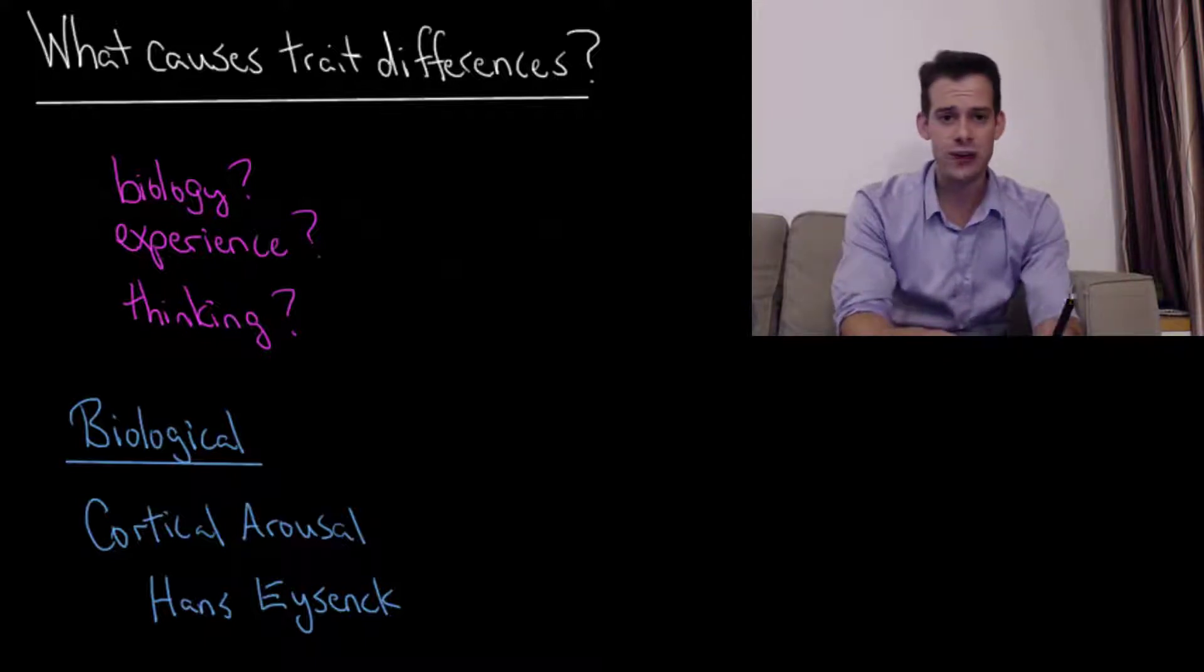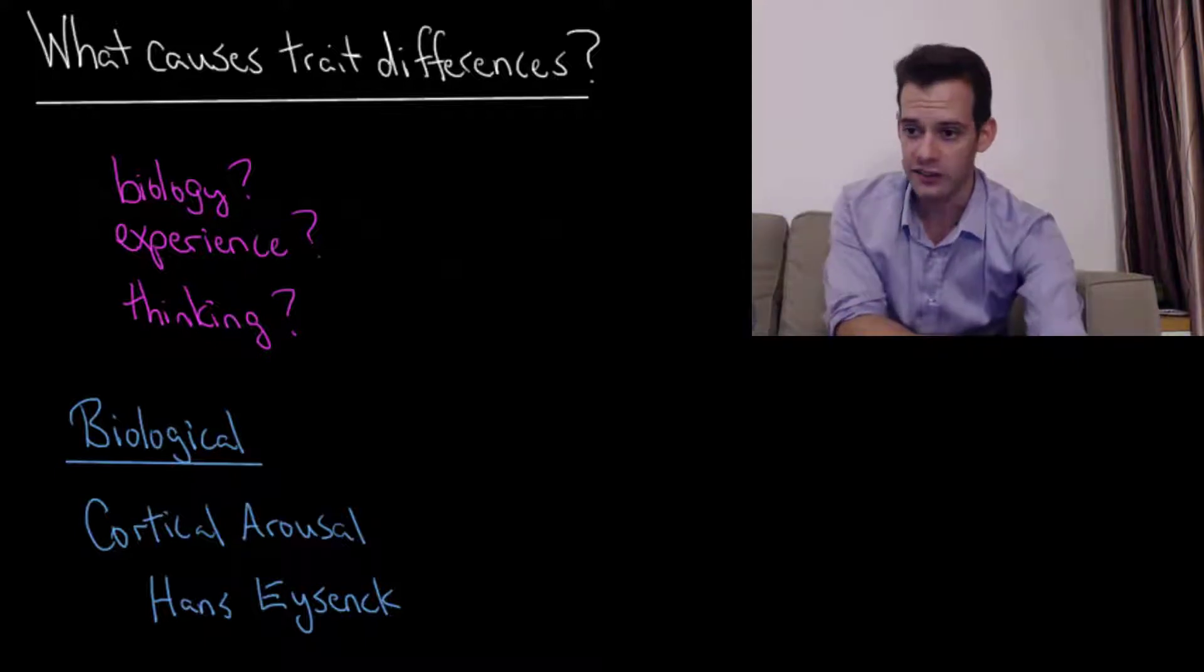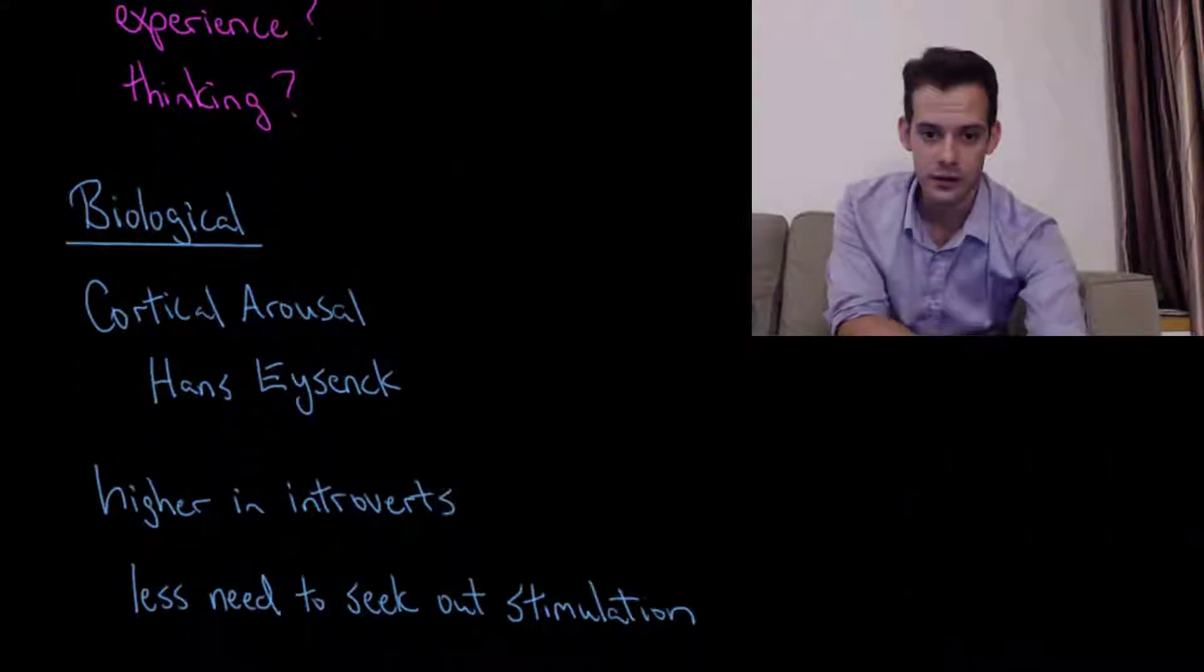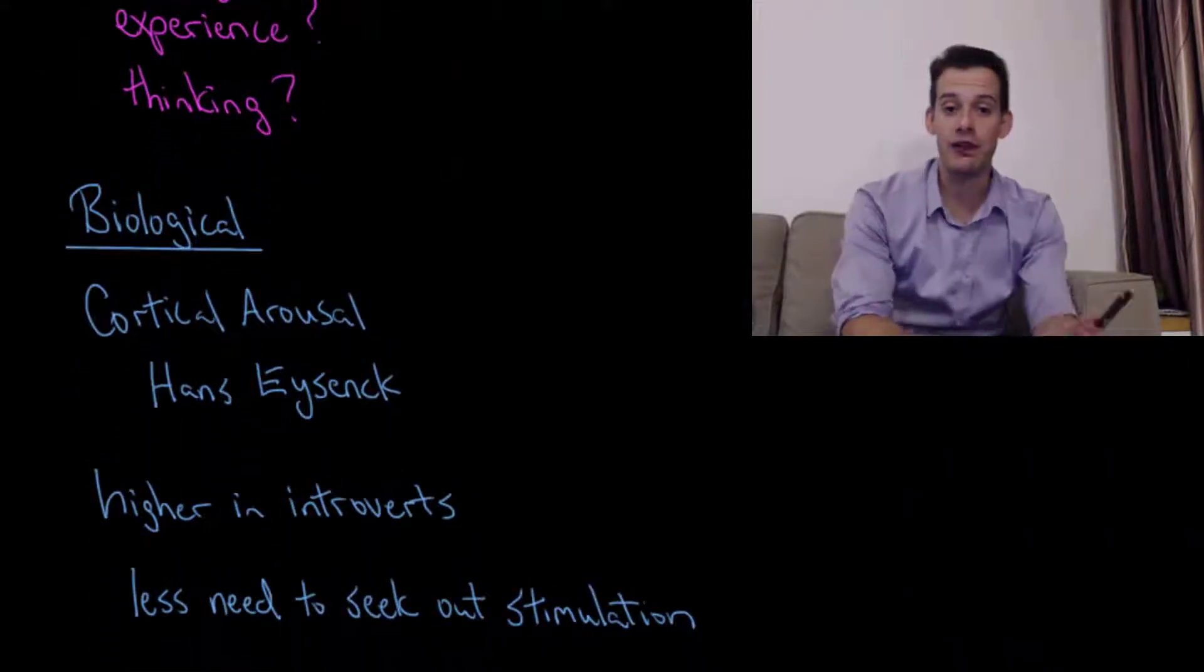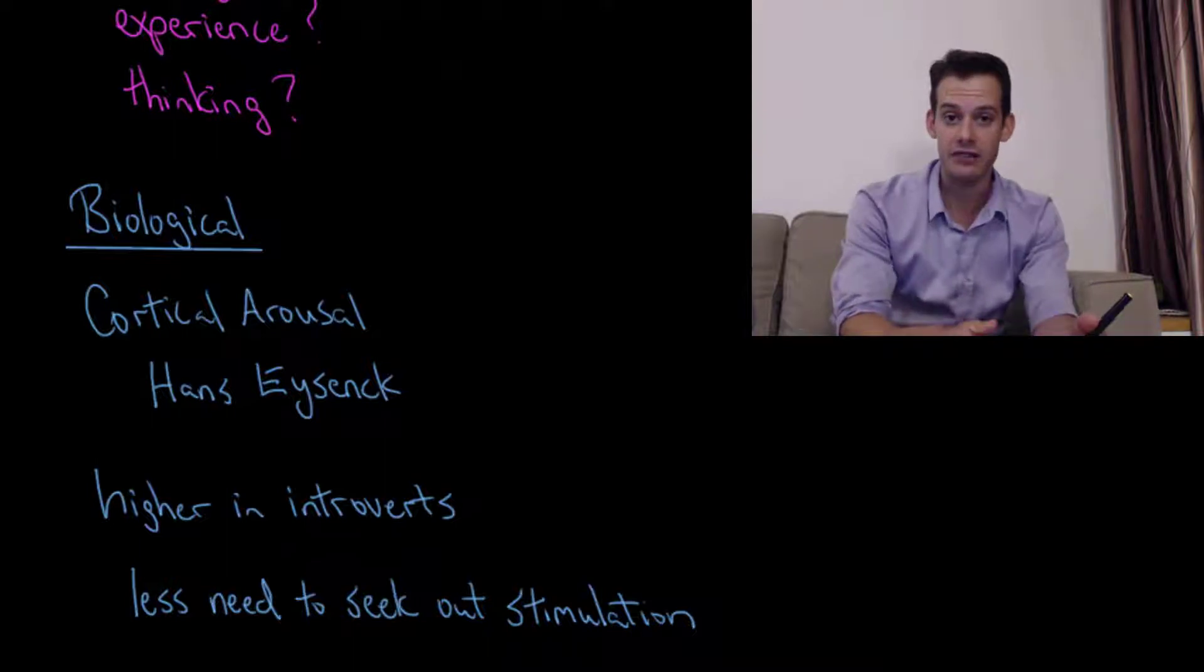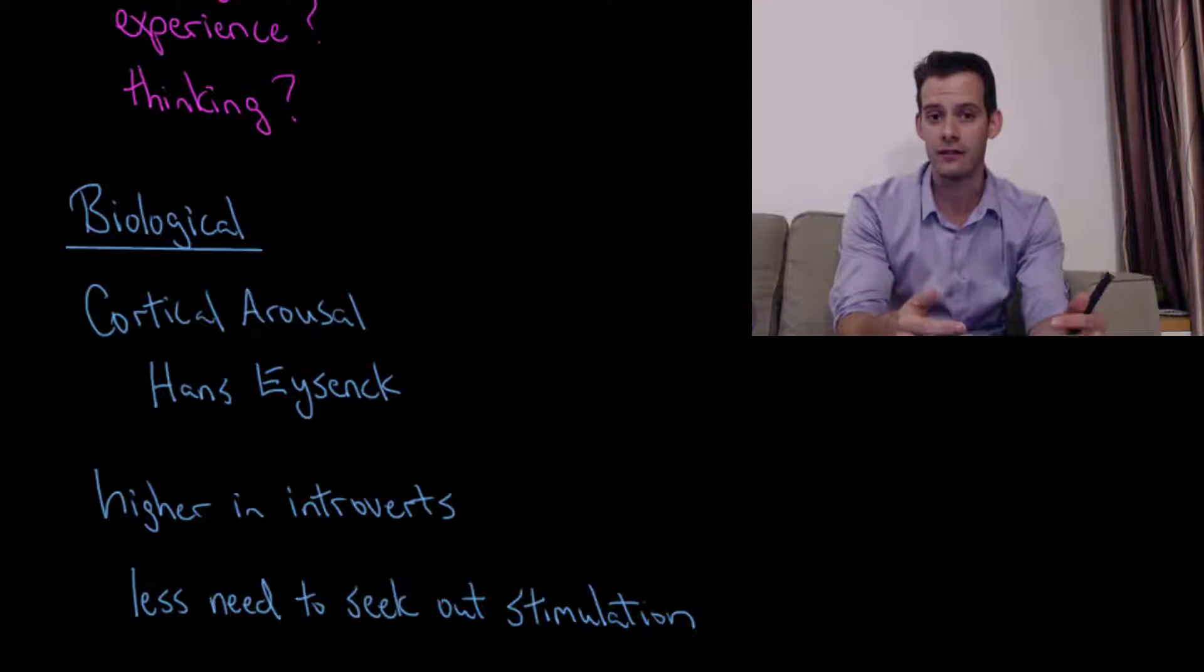Now when it came to explaining why people differed in extraversion, Eysenck proposed that it had to do with their level of cortical arousal. And this is actually a little bit counterintuitive because what he suggested was that people who are introverted actually had higher levels of cortical arousal. Now you might not expect that initially, but the idea is that they already have a high level of activity and so they don't need to seek out additional stimulation from the environment.